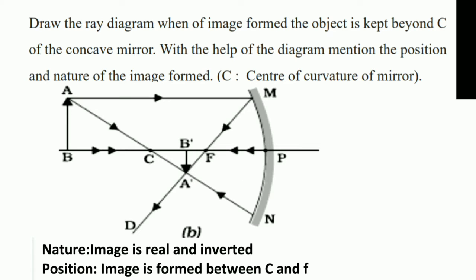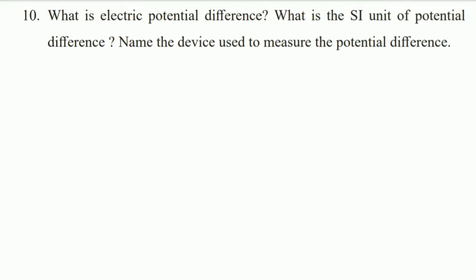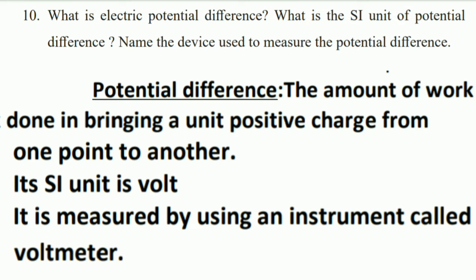Next question: what is electric potential difference, what is its SI unit, and name the device used to measure it? The potential difference is the amount of work done in bringing a unit positive charge from one point to another. The SI unit is the volt, and it is measured by the instrument called a voltmeter.